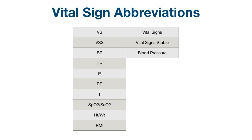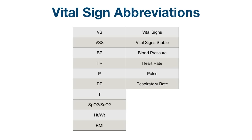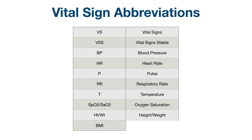BP: blood pressure. HR: heart rate. P: pulse. RR: respiratory rate. T: temperature. SPO2 or SAO2: oxygen saturation. HTWT: height and weight. BMI: body mass index.